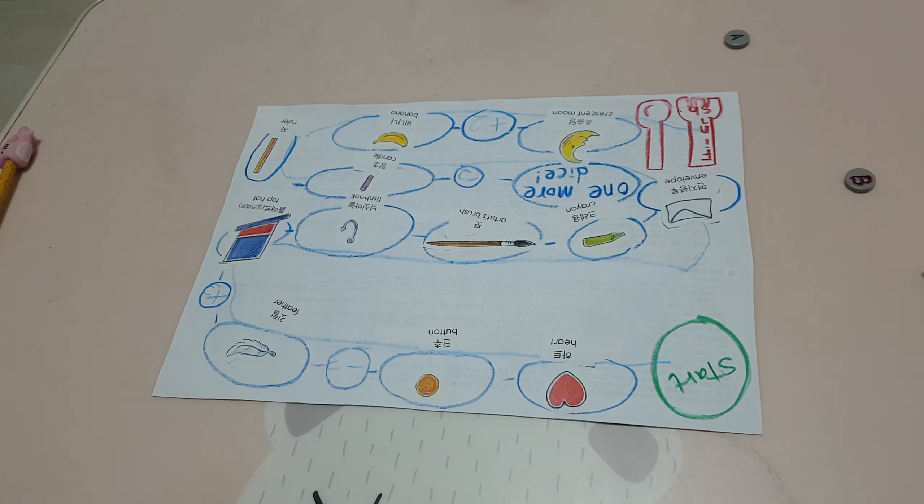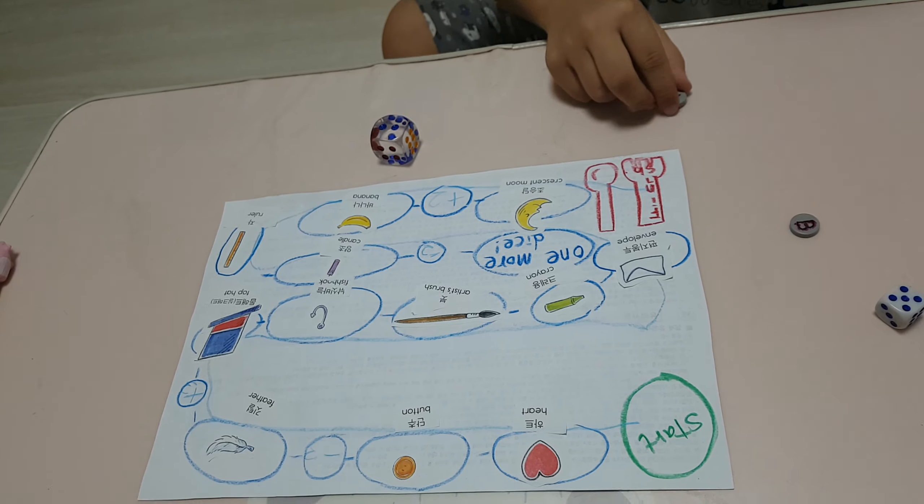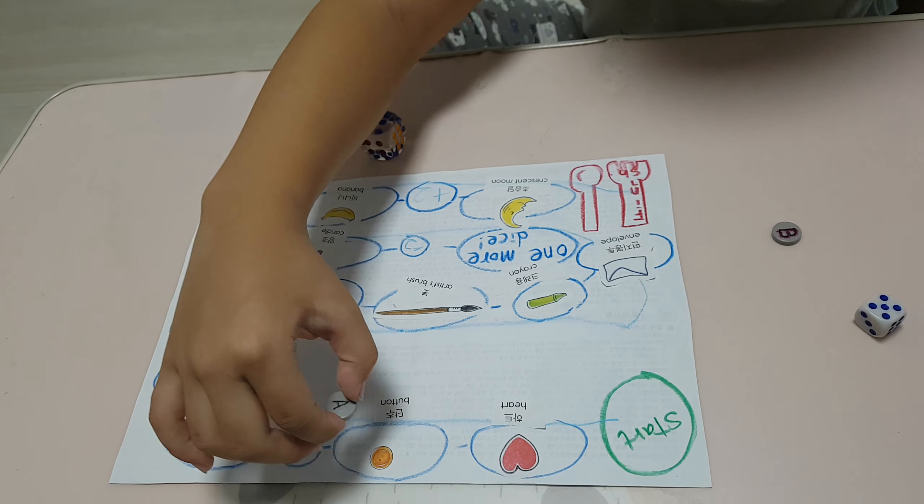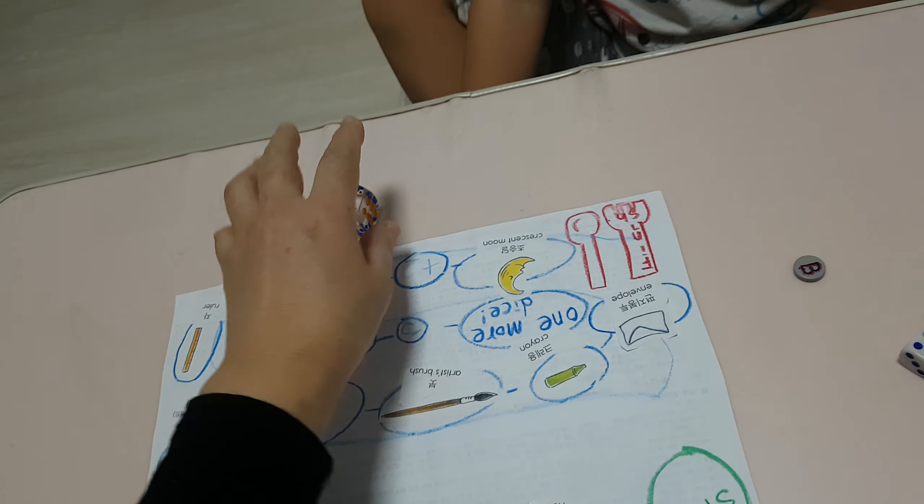Okay, rolling the dice. Okay, number two, you can go two steps, one. What's this? Button, okay.